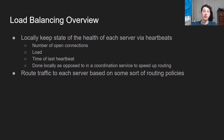Every single unit of time, load balancers exchange heartbeats with your application servers or even your databases to get an idea of how many open connections they have, if they're experiencing low or high load, and the time of the last heartbeat — keeping track of this in some sort of table on disk. This is done locally as opposed to an external coordination service, because if it was done externally, you'd have to query that every single request, which would be a huge performance hit. Then you take all these metrics and route traffic to each server based on some sort of routing policy.